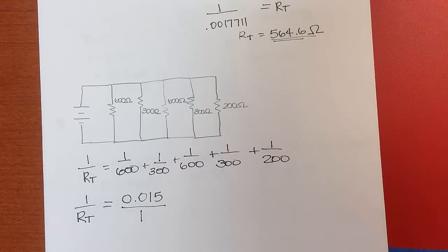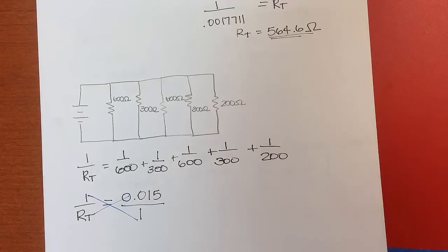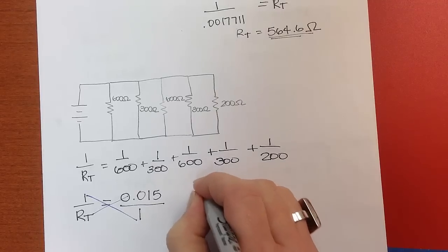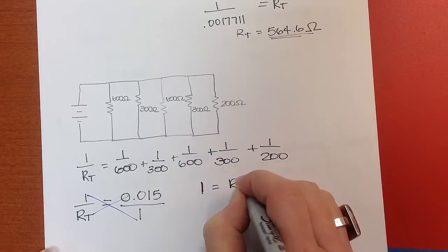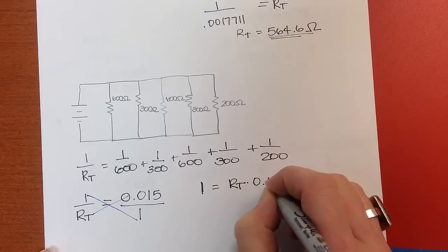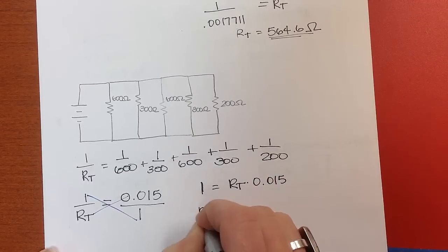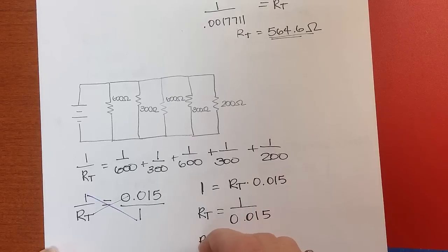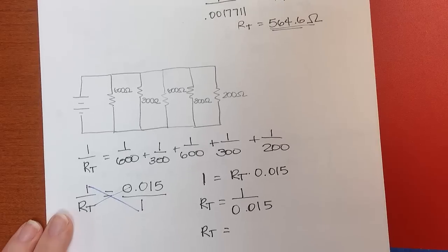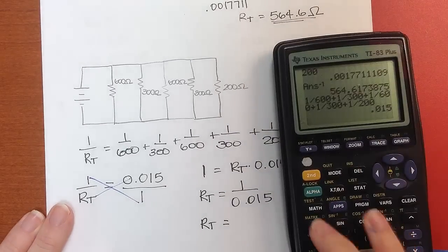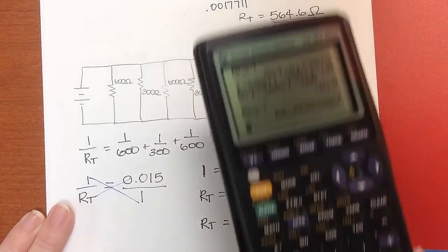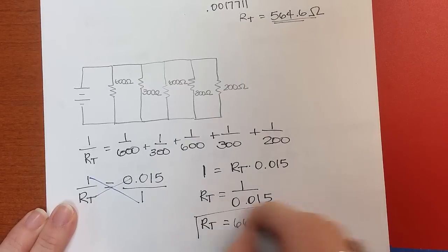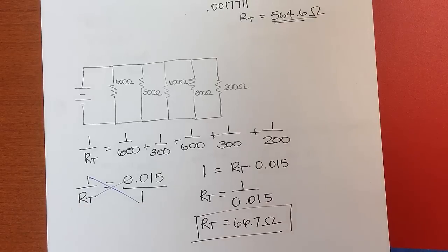We cross multiply and divide — imagining this over 1 — so R_T equals 1 over 0.015. I hope this has helped you a little bit with equivalent resistance and those practice problems.